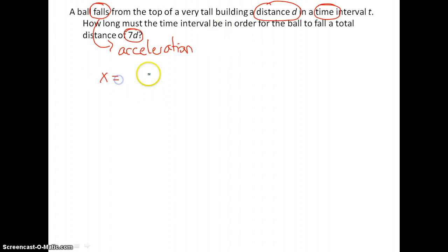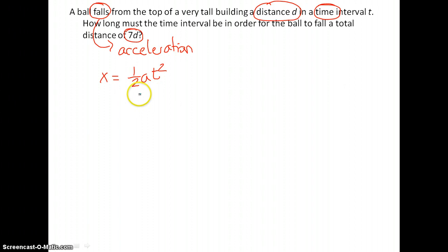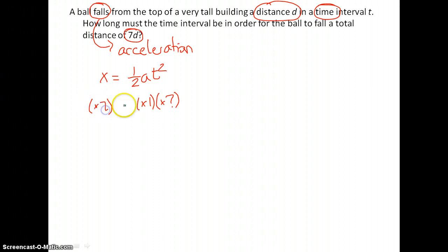The displacement of that object is one-half at squared. What's going to stay constant? Acceleration — so that's times one. We do not know time, but they give us the distance: it's going to be times seven.